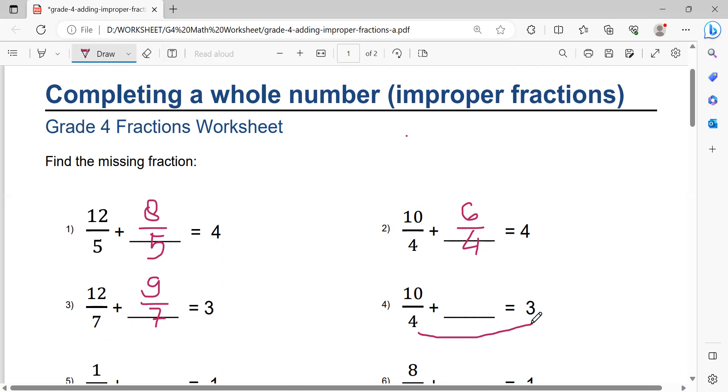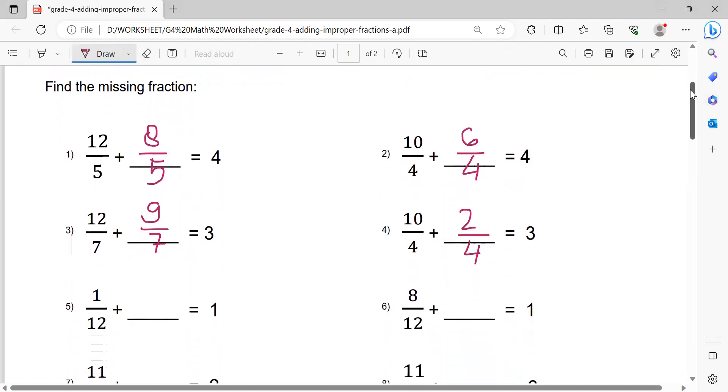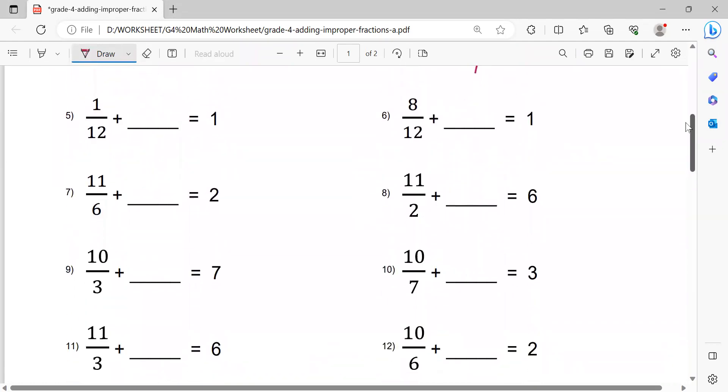Now this one. 4 times 3 equals 12. 12 minus 10 equals 2. 2 over 4, like this. Now, number 5.